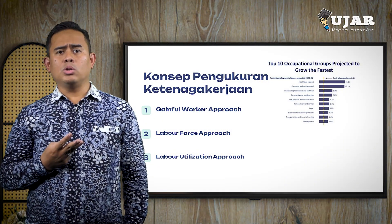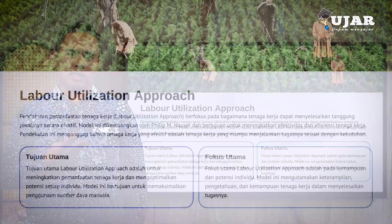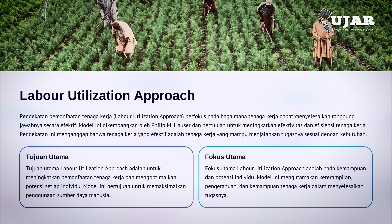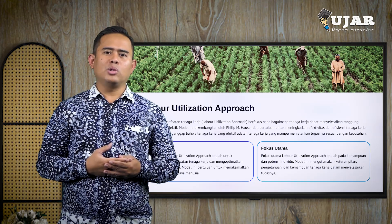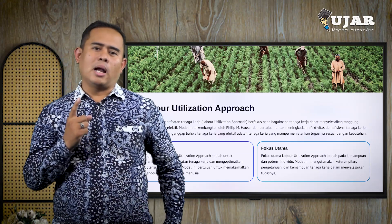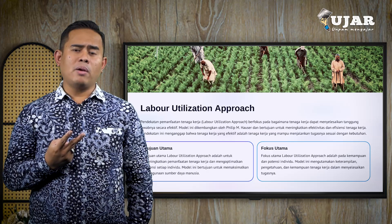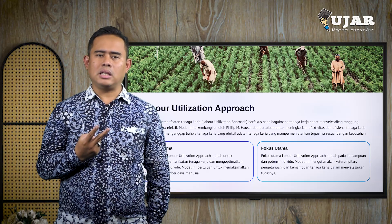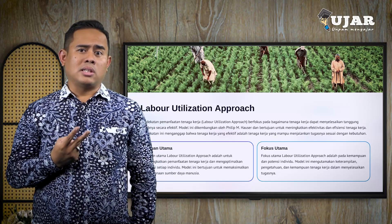Pendekatan yang ketiga yaitu Labor Utilization Approach. Pendekatan ini awalnya dikembangkan oleh Philip M. Hauser. Labor Utilization Approach diberlakukan demi menyempurnakan rancangan tenaga kerja, dan tujuan dari pendekatan ini lebih berorientasi pada bagaimana kemampuan tenaga kerja dalam menyelesaikan segala bentuk tanggung jawabnya. Menurut konsep ini, tenaga kerja dibagi menjadi beberapa bagian: pertama, tingkat pemanfaatan penuh atau sepenuhnya digunakan; kedua, kurang dimanfaatkan karena jumlah orang yang bekerja sedikit, dengan gaji rendah di bawah standar — sering disebut setengah pengangguran.